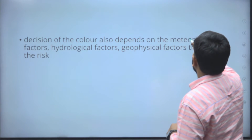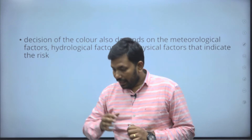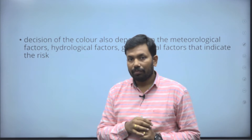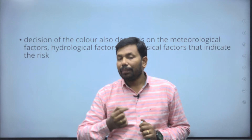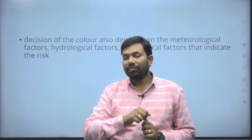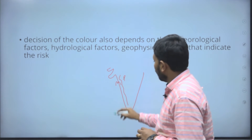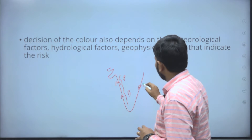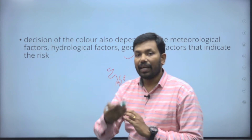The color decision also depends on meteorological, hydrological, and geophysical factors, and indicates the risk level. For example, east Odisha is more affected than west Odisha. Coastal Tamil Nadu is more affected than central Tamil Nadu like Coimbatore. Coastal Andhra is more affected than Rayalaseema. Mumbai is more affected than Bangalore. You must differentiate these regions clearly in your answer about India.